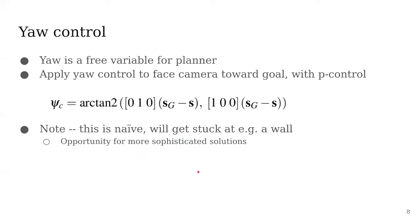Yaw is a free variable for the planner. In this case, we adopt a very naive yaw control, P-control, to face the camera toward the goal. Since it's a naive approach, it can get stuck in front of a wall. In this case, a high-level planner can be introduced to provide more intelligent yaw so that you could escape this situation.